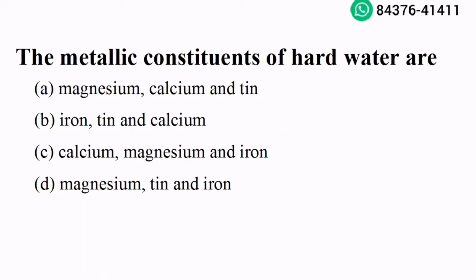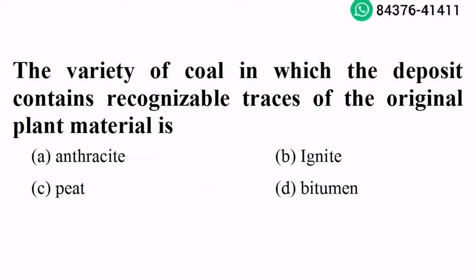The metallic constituents of hard water are calcium, magnesium, and iron. Option C is the right answer. The variety of coal in which the deposit contains recognizable traces of original plant material is peat. Option C is the right answer.